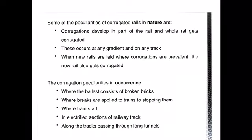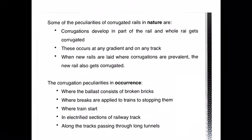Regarding where corrugation occurs: corrugations are found to occur in places where broken bricks are used as ballast. Usually stone aggregate is used as ballast, but kinkers, broken bricks, and locally available mooram soil are also used. Corrugations occur wherever the ballast consists of broken bricks, at places where brakes are applied to stop the train or where the train starts, in electrified sections of the railway track, and along tracks passing through long channels.